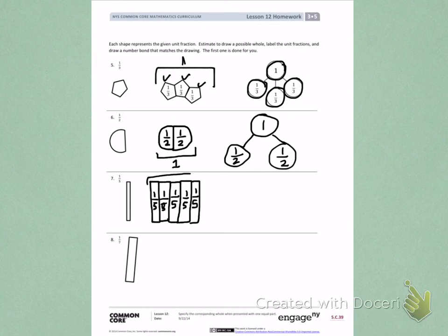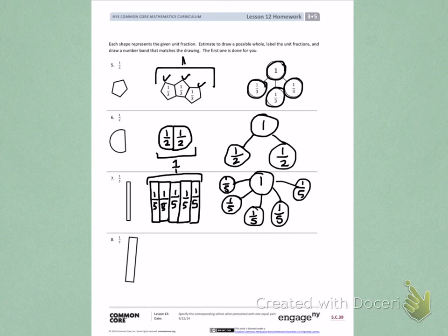Again, the total is one. So my number bond has a total of one. It took one-fifth, two-fifths, three-fifths, four-fifths, and five-fifths to equal one whole. Try number 8 on your own.